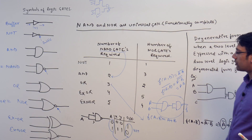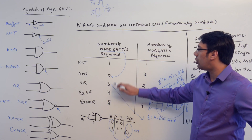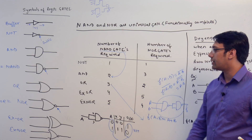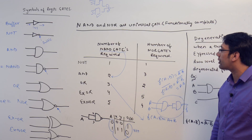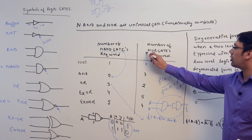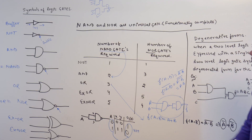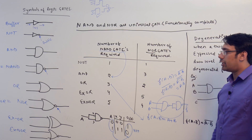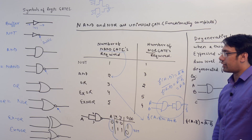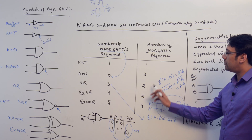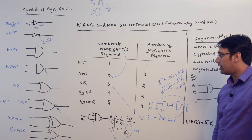Four NAND gates are required to create an XOR gate, and five NAND gates are required to create an XNOR gate. In the same way, for the NOR gate: one NOR gate is required to create a NOT gate, three NOR gates are required to create an AND gate, two NOR gates are required to create an OR gate, five NOR gates are required to create an XOR gate, and four NOR gates are required to create an XNOR gate.